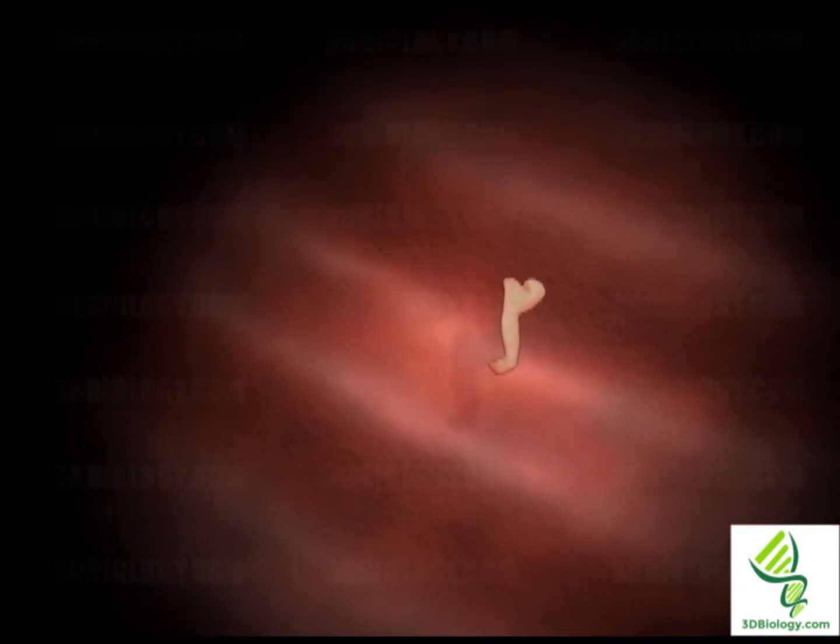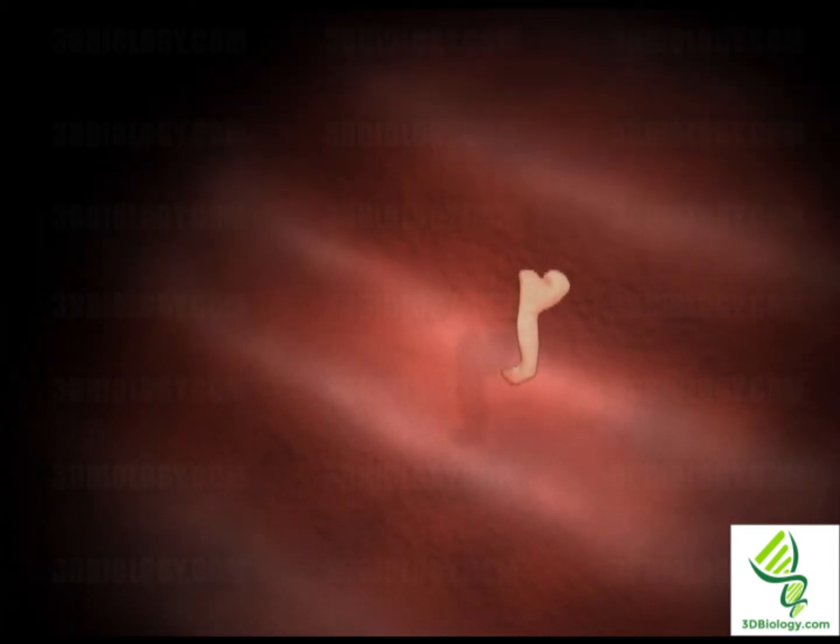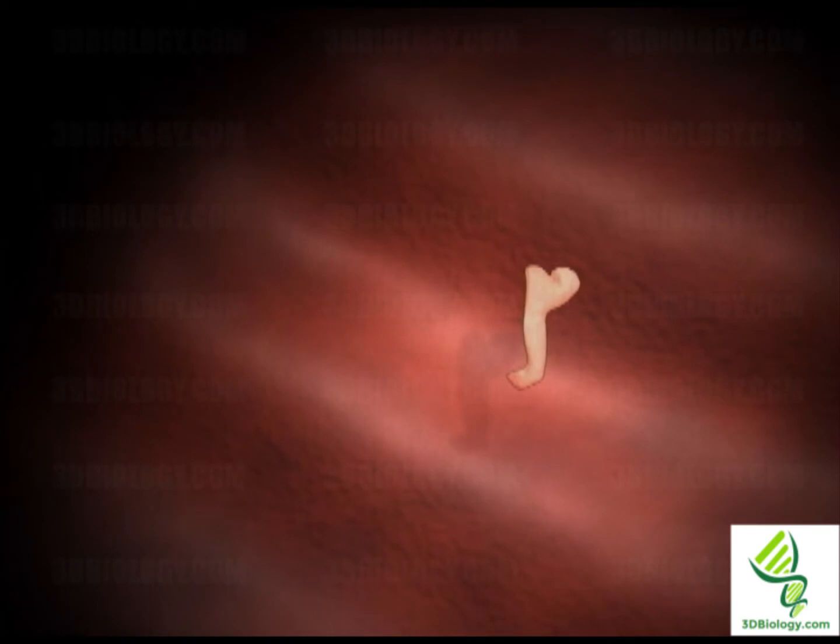In four weeks, the fertilized egg has turned into billions of cells which will form the nervous, muscular, vascular, digestive and skeletal systems of the human body.